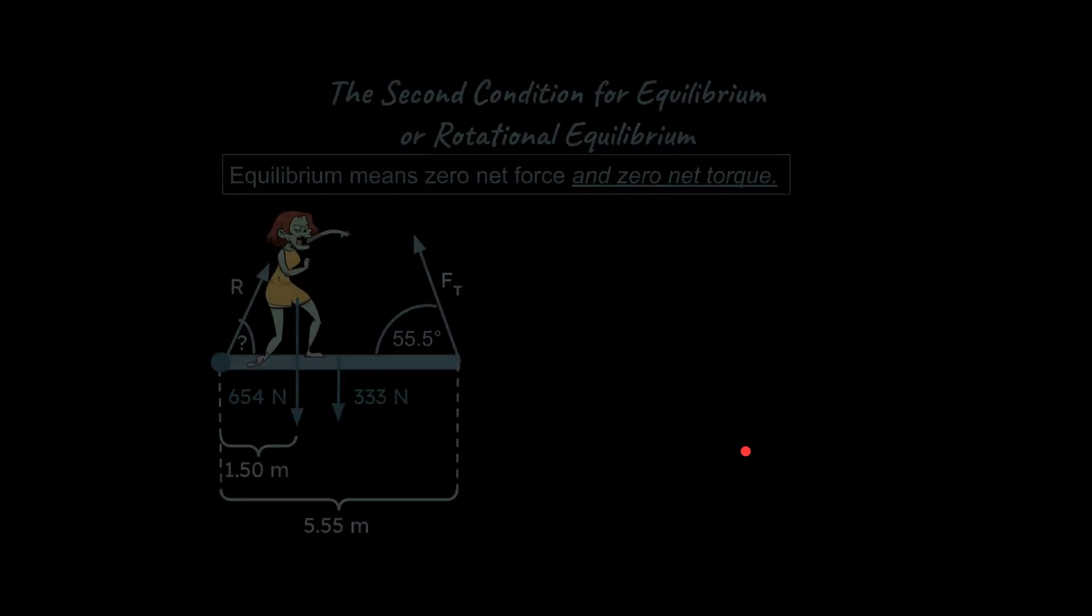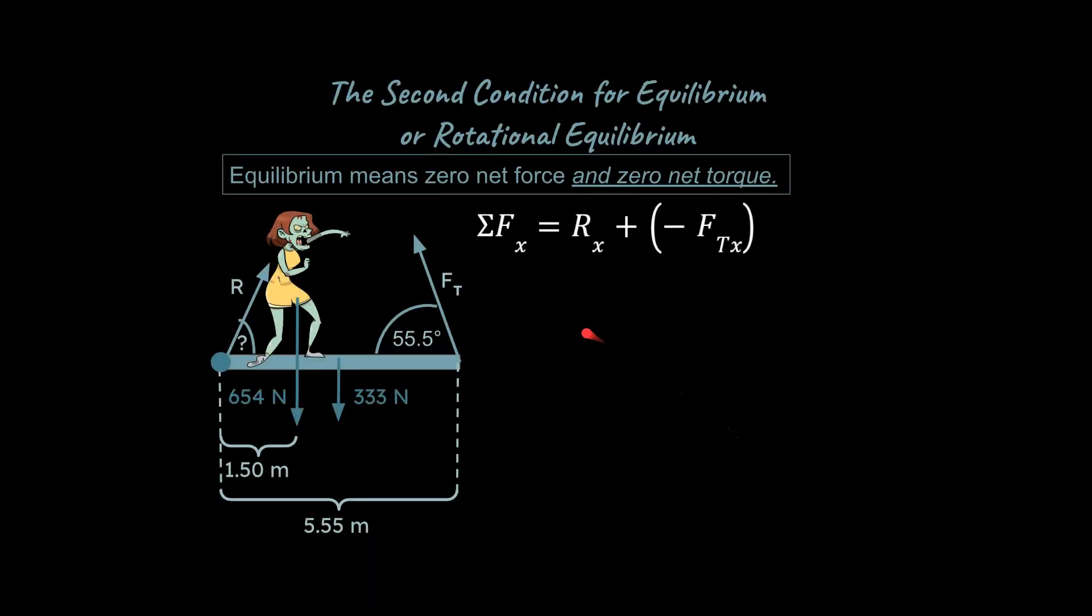So one way we can approach this is just now we can go ahead and use the sum of the forces in the X, because now we know more about this information right here. So we do the sum of the forces in the X and literally add up the forces in the X. Notice that this will be a positive value. This is going to be a negative value here.